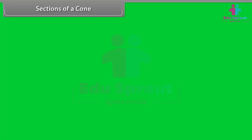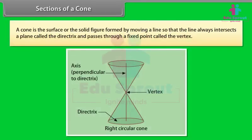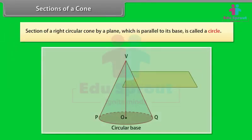Sections of a cone: A conic section is the curve obtained when a conical surface is intersected by a plane. A cone is the surface or solid figure formed by moving a line so that the line always intersects a plane called the directrix and passes through a fixed point called the vertex. Section of a right circular cone by a plane which is parallel to its base is called a circle.